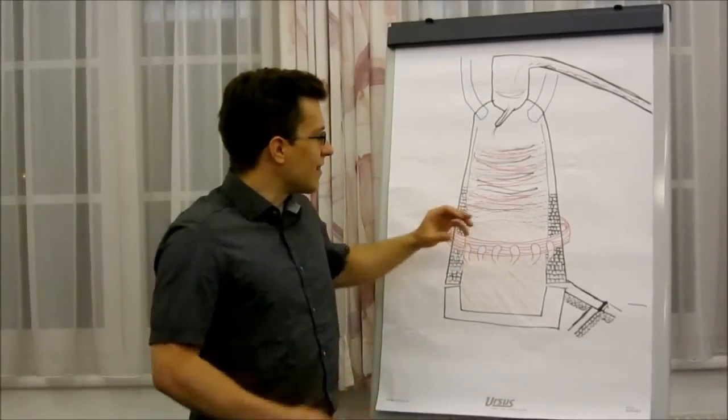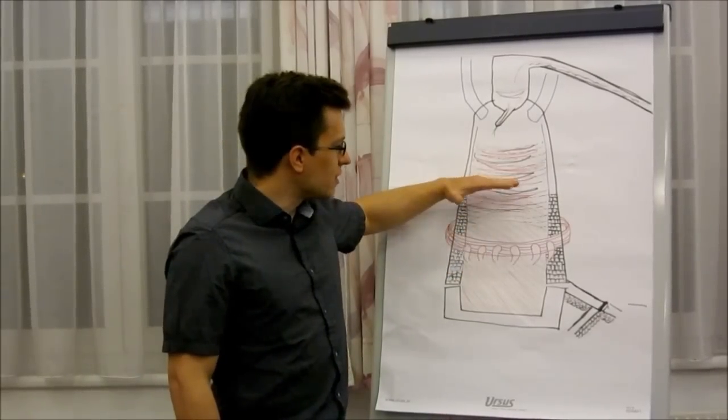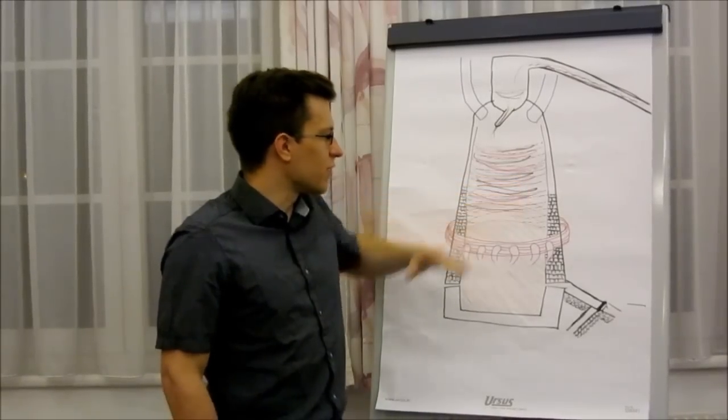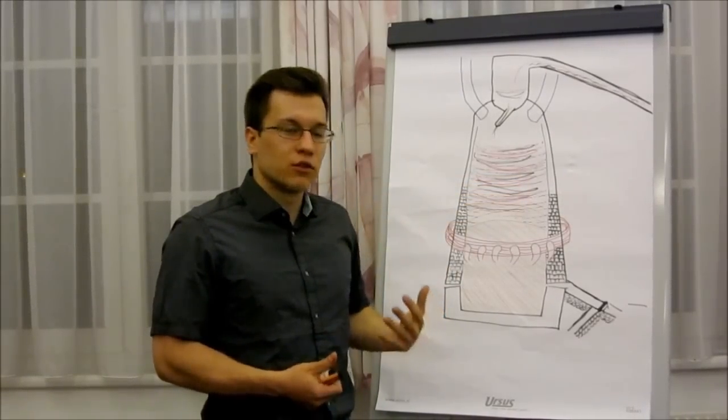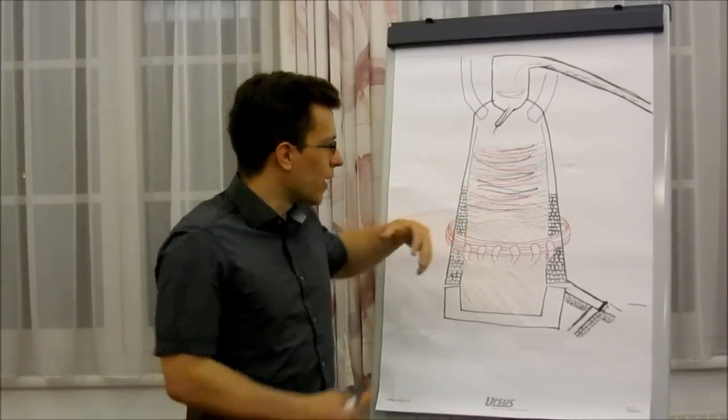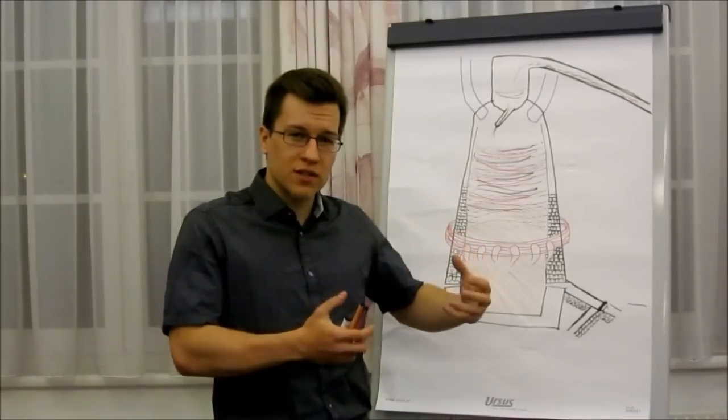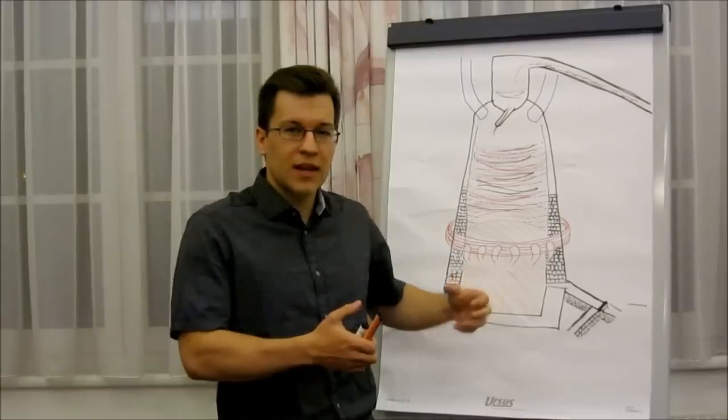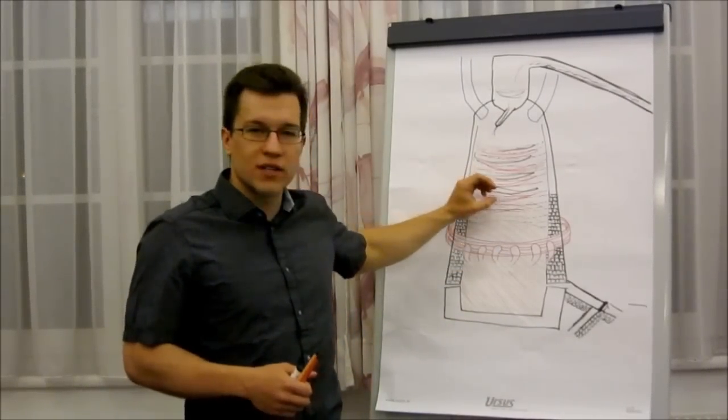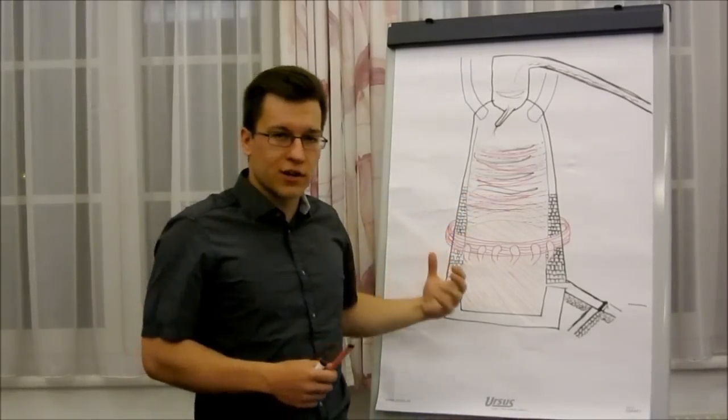As I said, the coke is the reduction agent. So at a certain stage, starting around, well, there are different parts, there are different reactions that happen to reduce it. Basically, whenever an oxygen atom is set free in the process from the iron oxide, it bonds to a carbon from the coke. That is why the coke is in there. The carbon in the coke is our reduction agent.